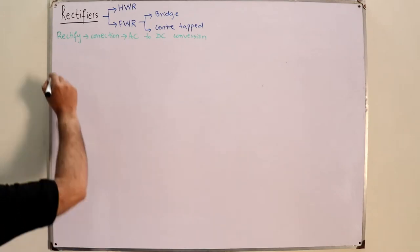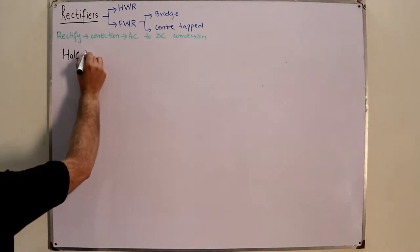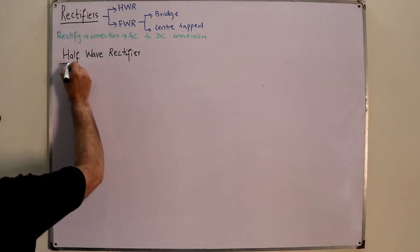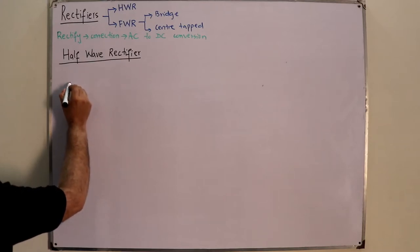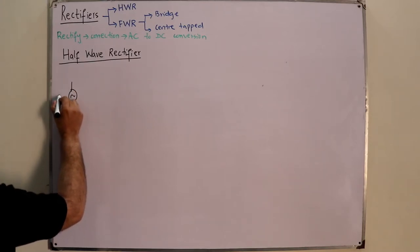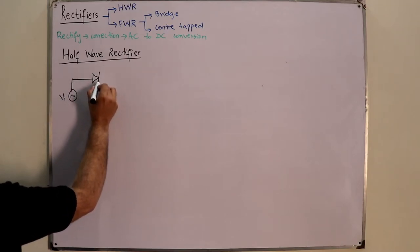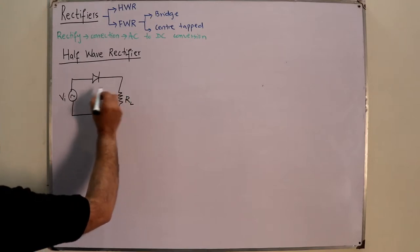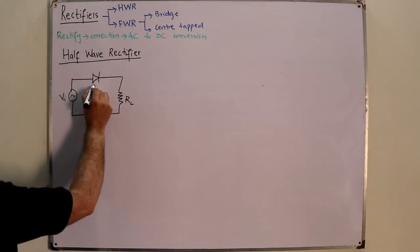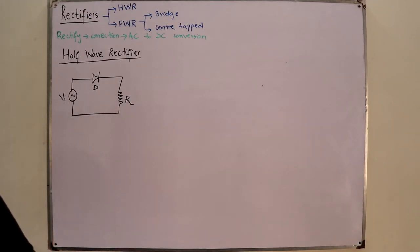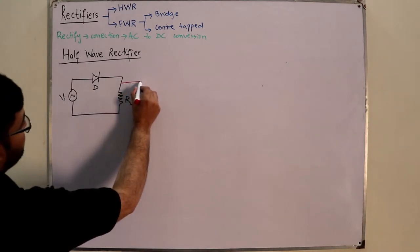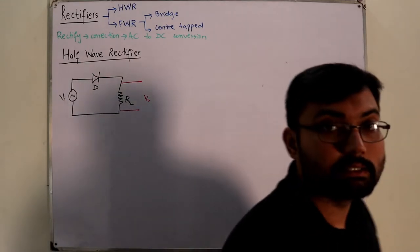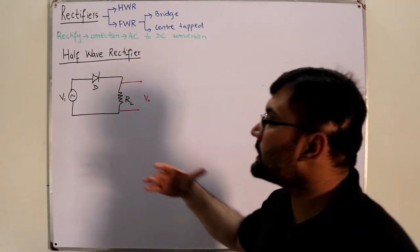The first topic we start today is the half wave rectifier. As the name suggests, it rectifies half of the wave of the signal. The circuit is as simple as you want: we have an input time-varying source, a diode, and a load resistor R_L connected across it. The output is taken across the terminals of this resistor. This is the simple half wave rectifier circuit.